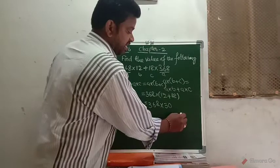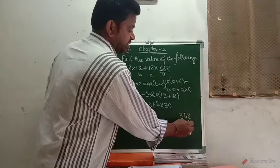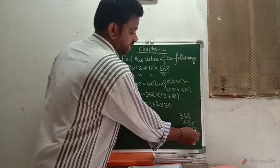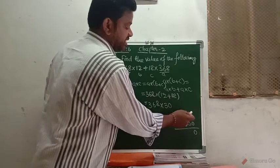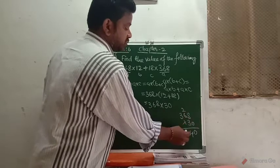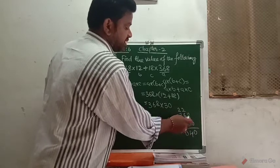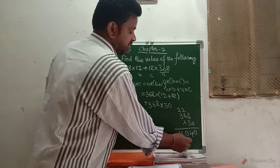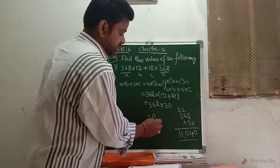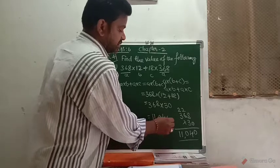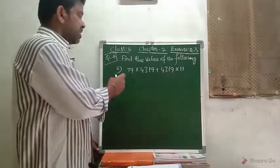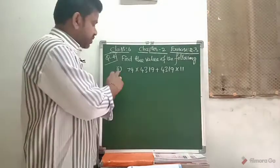Now it is very easy to find the solution. 368 into 30 — you just write 0 here and multiply 368 by 3. 3 times 8 is 24, 3 times 6 is 18 plus 2 is 20, and 3 times 3 is 9 plus 2 is 11. So the result of this given question is 11,040.